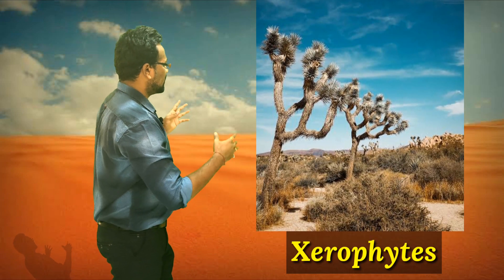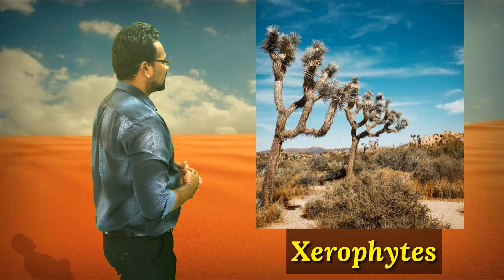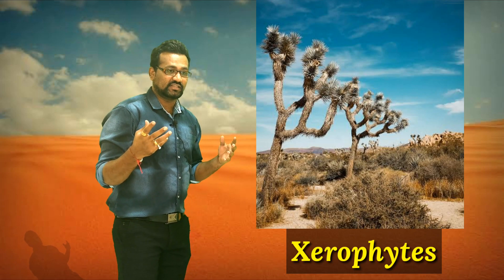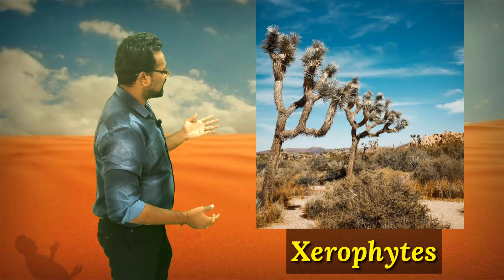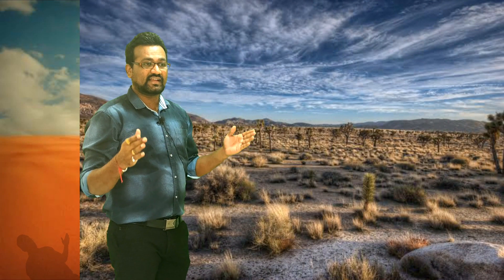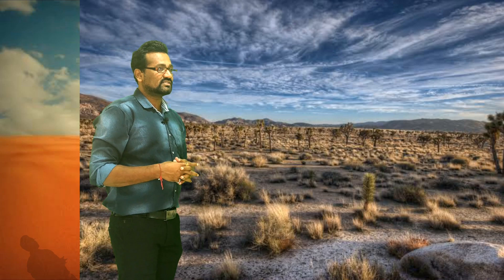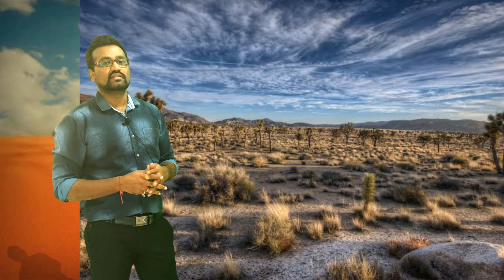Today we are going to focus on the area where water availability is very less, or we can say the water scarcity region. These regions include the desert area, which is famous for such conditions. The Xeric condition is the highlighting feature of such areas — meaning the soil shows acidic nature and less water holding capacity, and plants face water scarcity.